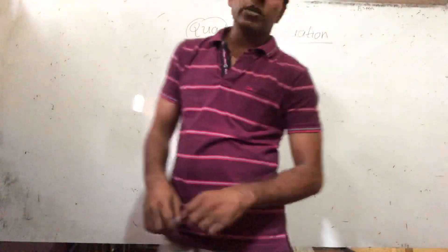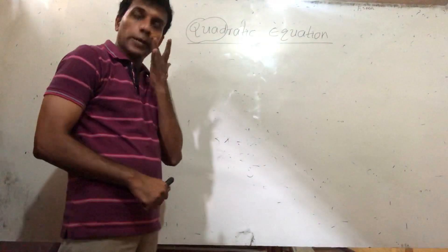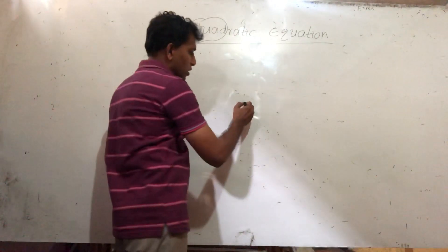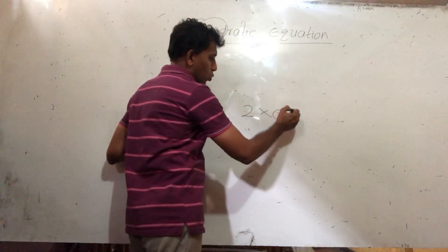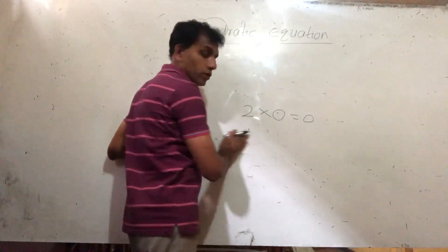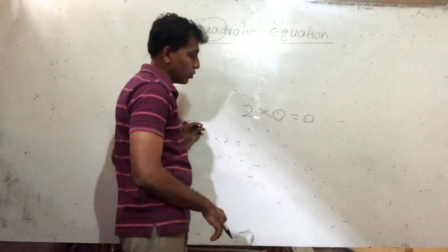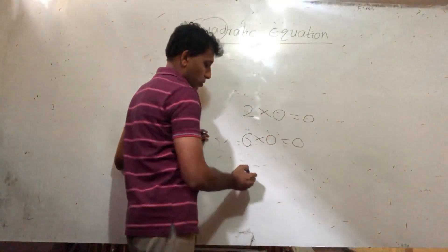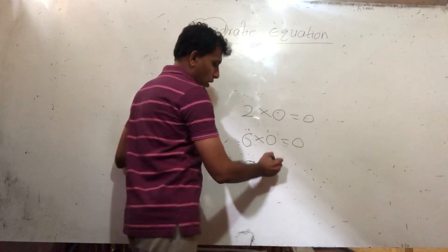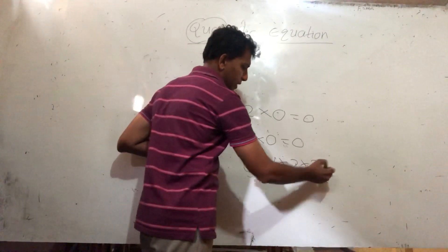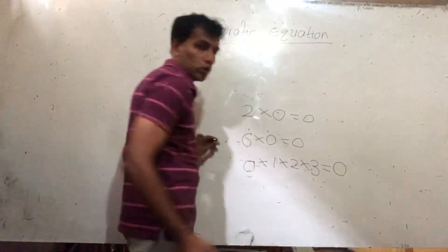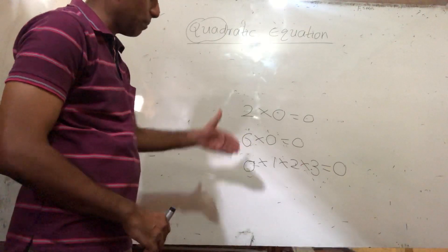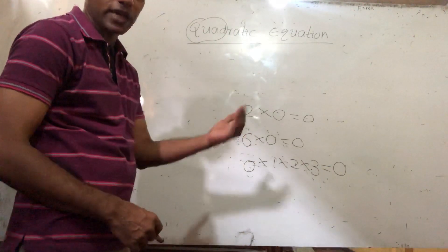Before we go to quadratic equations, let me show you a mathematical idea. You know that 2 times zero is zero, 6 times zero is zero — or zero times 1, 2, 3, whatever it is, the answer is zero. If you multiply with zero, if any one term is zero, the final answer is zero.